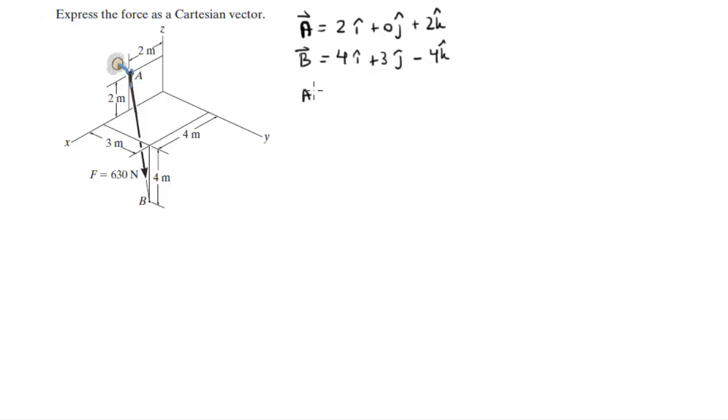Vector A to B is calculated by subtracting vector A from vector B. So 4 minus 2 is 2i, 3 minus 0 is 3j, and minus 4 minus 2 is minus 6k.